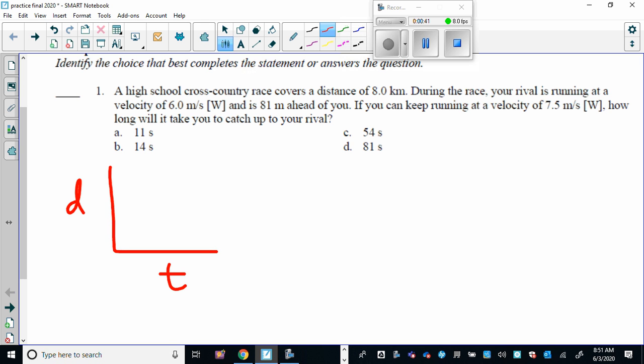Distance-time graph: you have you and your rival. You are going to be green, and you start here. That's you, and you're running with a velocity of 7.5 meters per second. Your opponent in blue starts 81 meters ahead of you and he's going slower, so his line will be less steep, but he starts here.